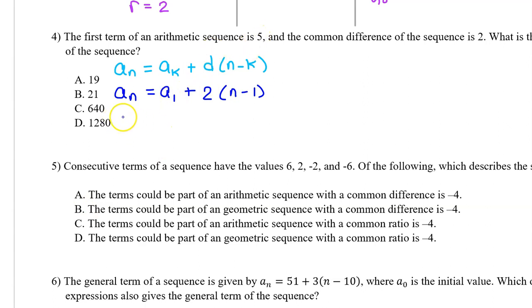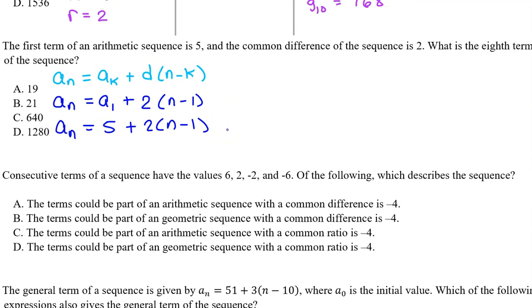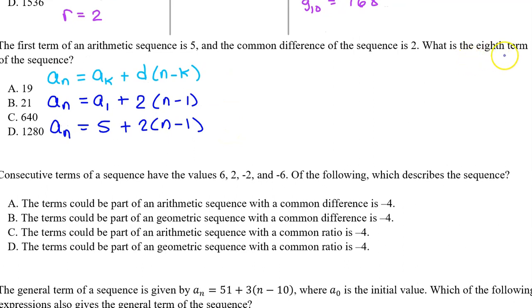Now, let's substitute 5 for a_1. So, we get a_n is equal to 5 plus 2 times n minus 1. This is a rule that we can use to find any term, including the eighth term of the sequence.